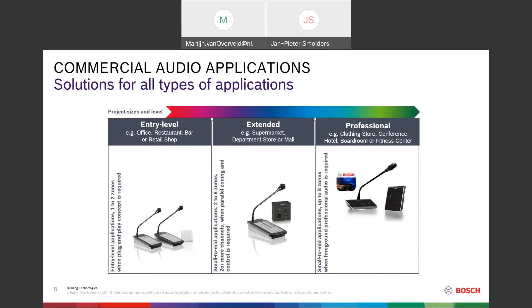The extended systems are for a bigger supermarket, large store, or mall — systems that can address two to six zones and have two or more amplifier channels. That means, for instance, in one zone you can have music and in another zone you can make an announcement. The professional system — the Planar Matrix — is for bigger environments like clothing stores, conference rooms, hotels, boardrooms, and fitness centers: a multi-purpose system with up to eight zones and good audio quality.